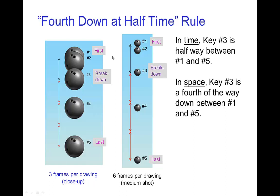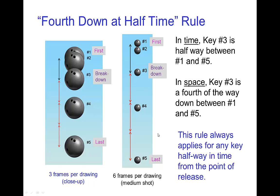We see this in two examples. In the first one, shooting on threes, the position of the bowling ball halfway in time between the first and last key is a fourth of the way down. A similar example shows the drawings all the way down to falling motion for a full twenty-four frames — one second. The breakdown here is twelve frames down from the apex, and again it's a fourth of the way down. This rule applies for any key that's halfway in time from the release point.